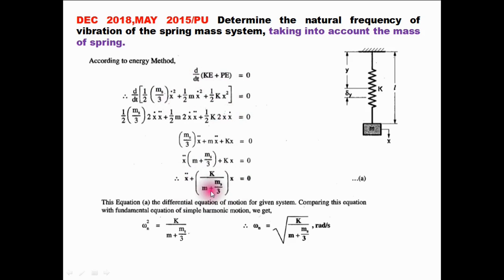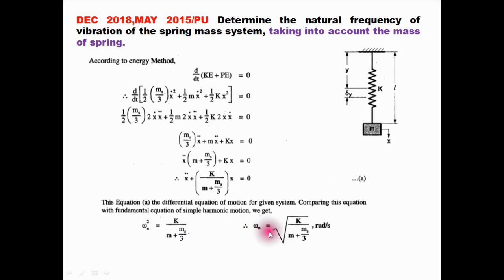Comparing this equation with simple harmonic motion, we get omega_n² equals k divided by (m + ms/3). So omega_n equals root of k/(m + ms/3). This is the answer for this question.